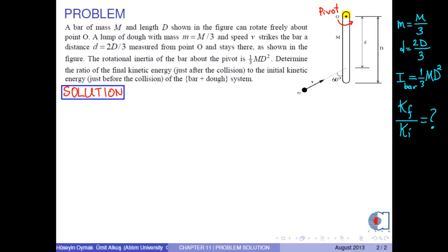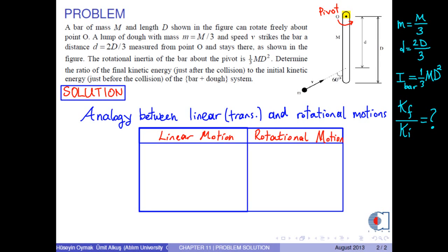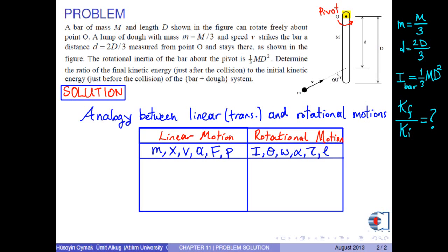Before solving the problem, let's have a look at the analogy between linear (translational) and rotational motions. Linear motion is described by the parameters: mass, linear distance, linear velocity, linear acceleration, force, and linear momentum. On the other hand, rotational motion is described by the parameters: moment of inertia, angular distance, angular velocity, angular acceleration, torque, and angular momentum.